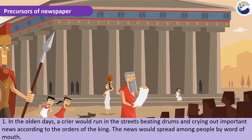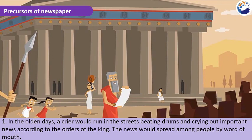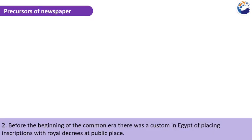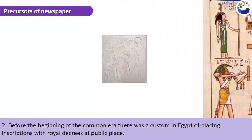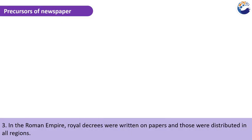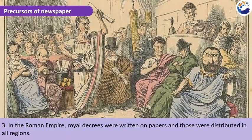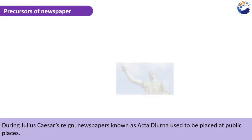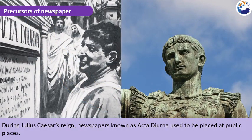Precursors of the newspaper: In the olden days, a crier would run in the streets beating drums and crying out important news according to the orders of the king. Before the common era, Egypt had a custom of placing inscriptions with royal decrees at public places. In the Roman Empire, royal decrees were written on papers and distributed in all regions. During Julius Caesar's reign, newspapers known as Acta Diurna used to be placed at public places.